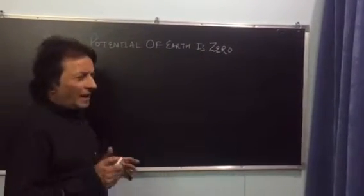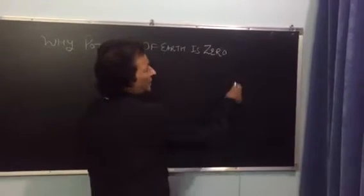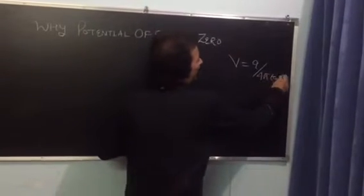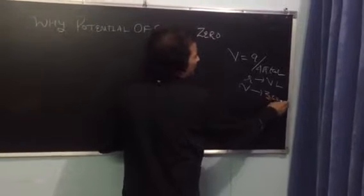Generally the answer is given: the size of the earth is very large, then the potential is q upon 4 pi epsilon naught r. As r is very large, so v tends to zero.